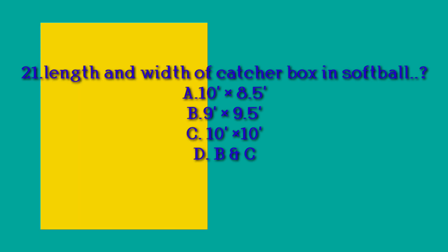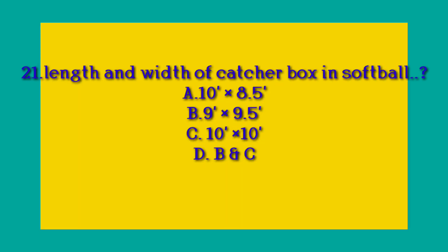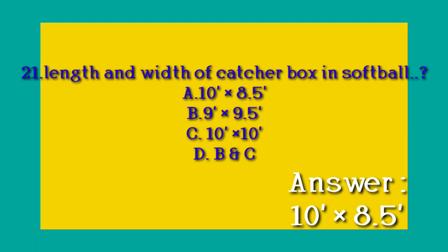Question number 21: What are the length and width of the catcher box in softball? Option A. 10 feet by 8.5 feet. Option B. 9 feet by 9.5 feet. Option C. 10 feet by 10 feet. Option D. B and C. Answer: A. 10 feet by 8.5 feet.